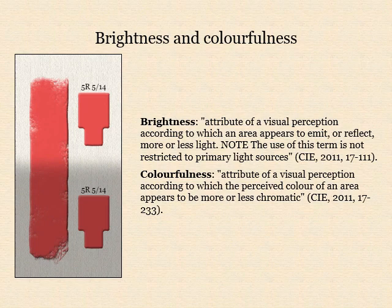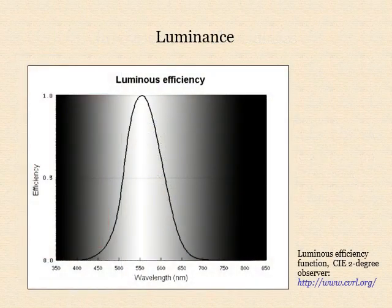Note that brightness and colourfulness are defined in the CIE system as attributes of visual perception, not as physical properties of lights — but what are they perceptions of? The brightness of a light is the way in which we perceive its luminance. Luminance is a psychophysical measure, neither purely physical nor purely perceptual, that can be explained as follows.